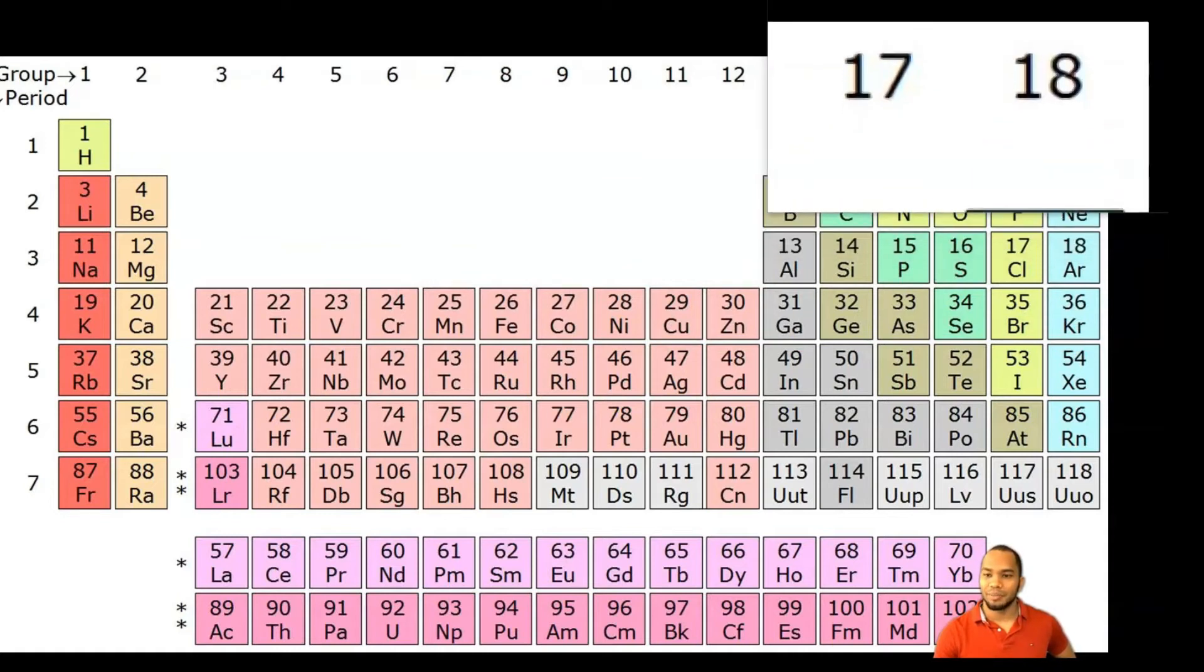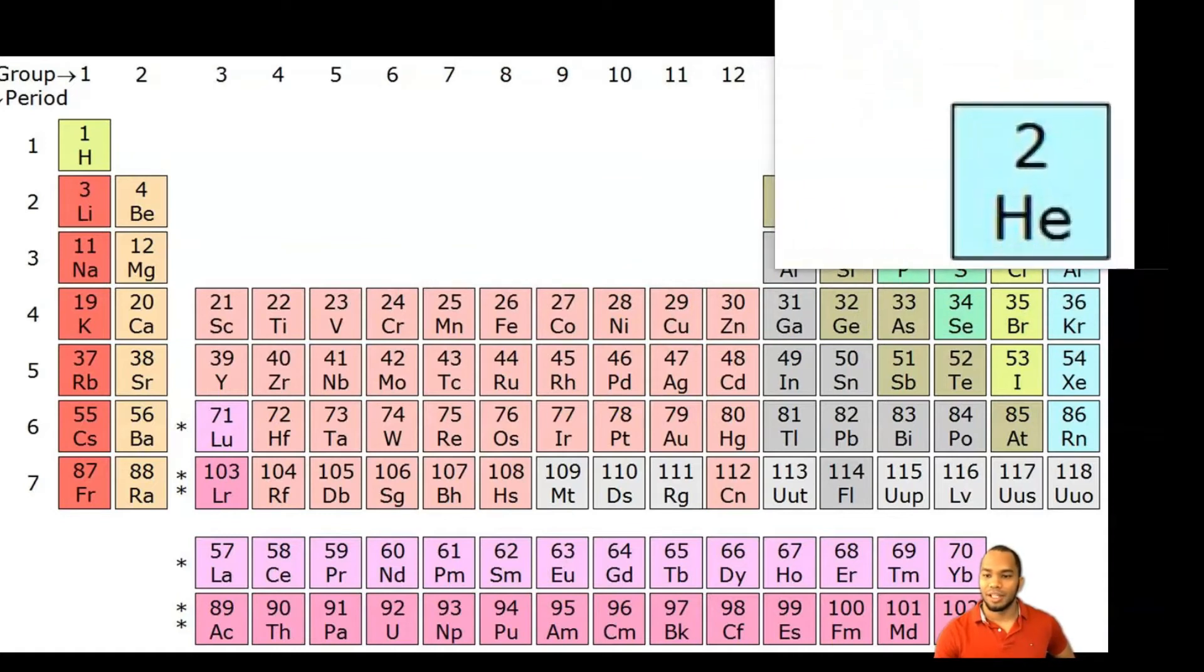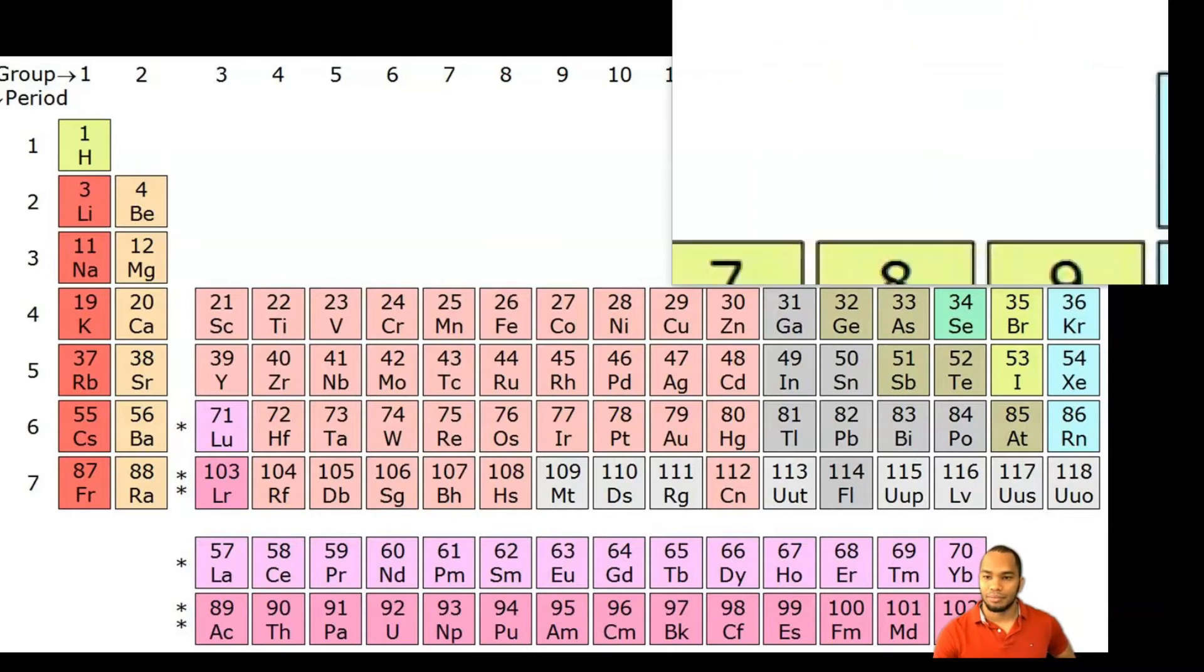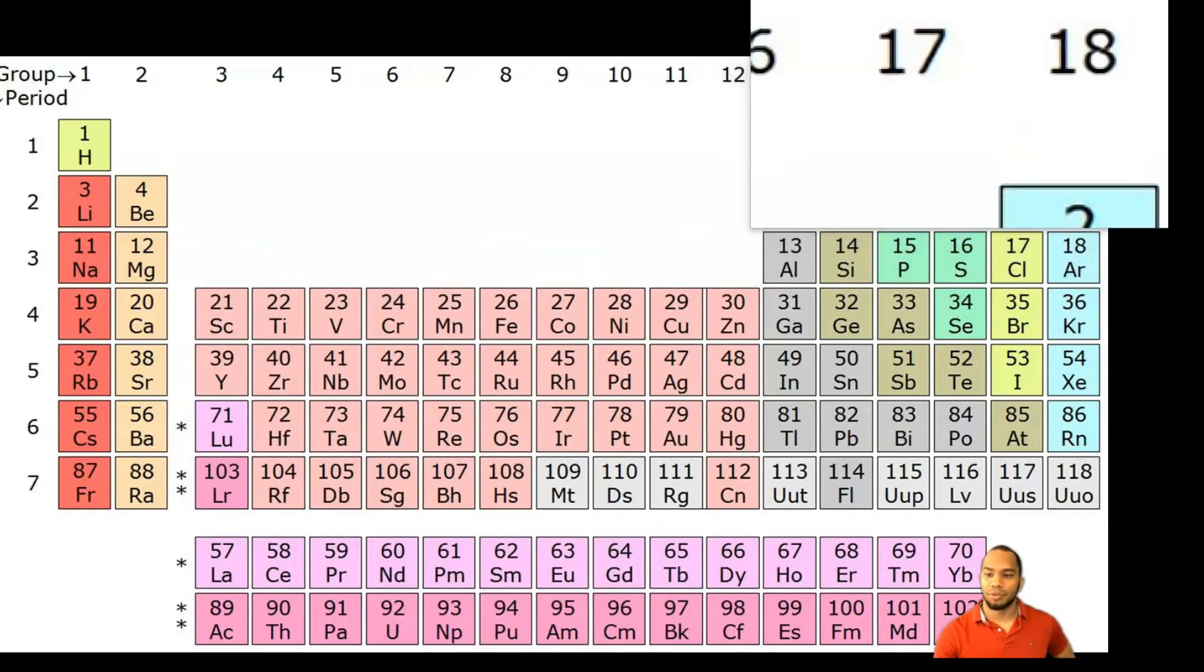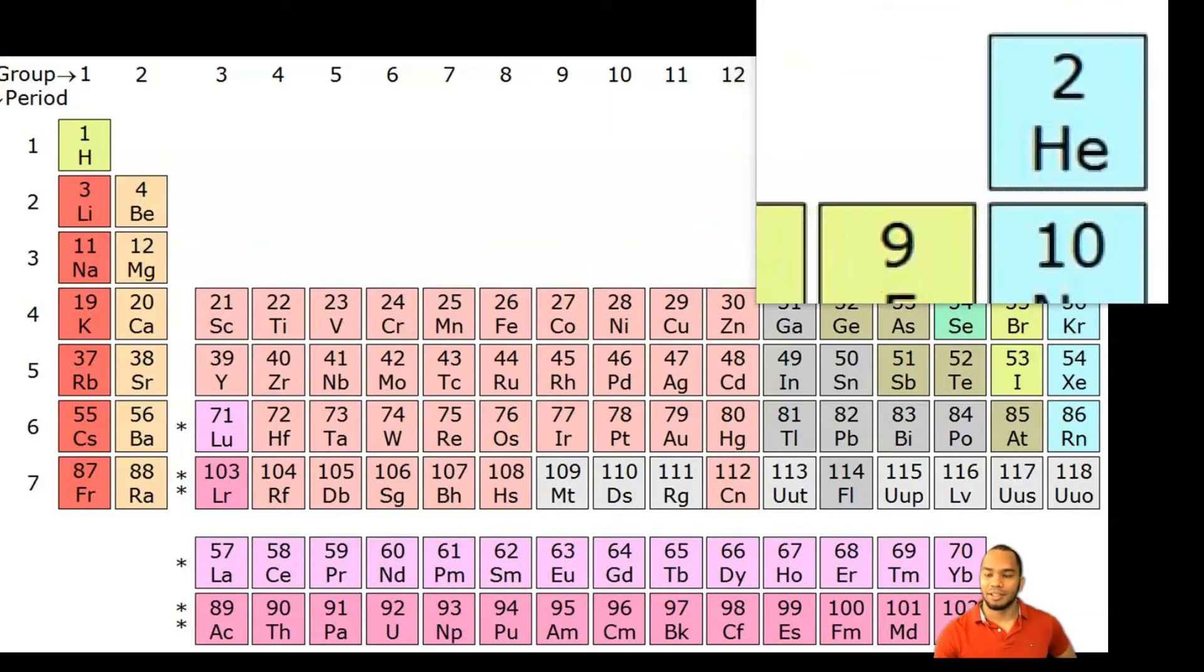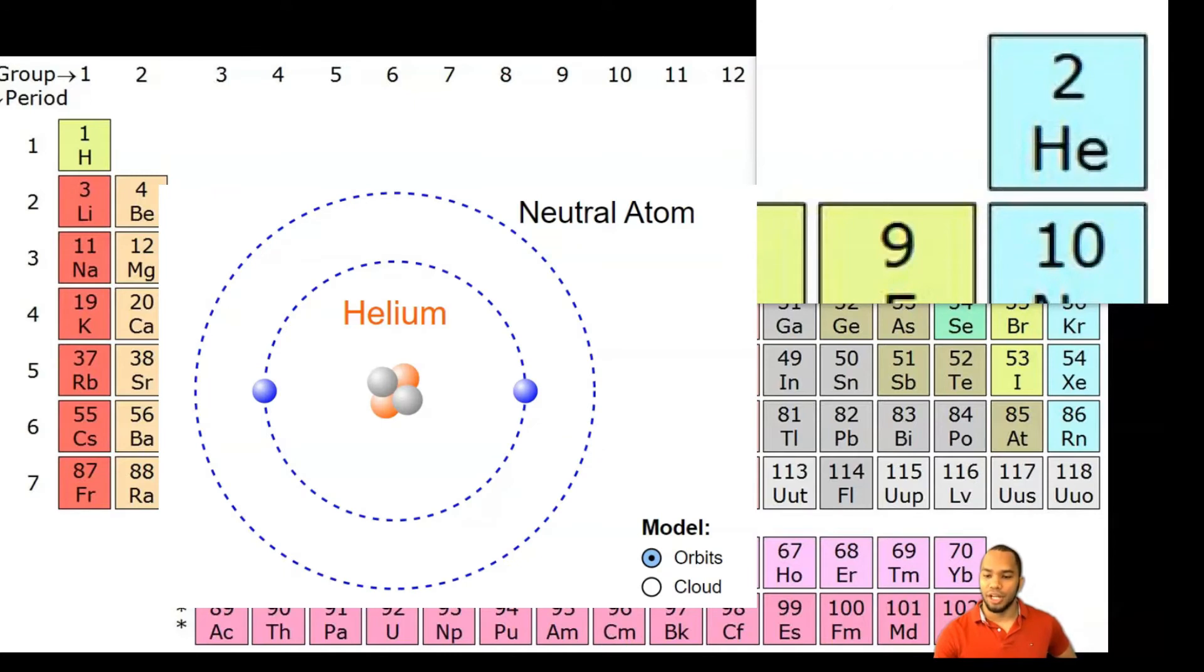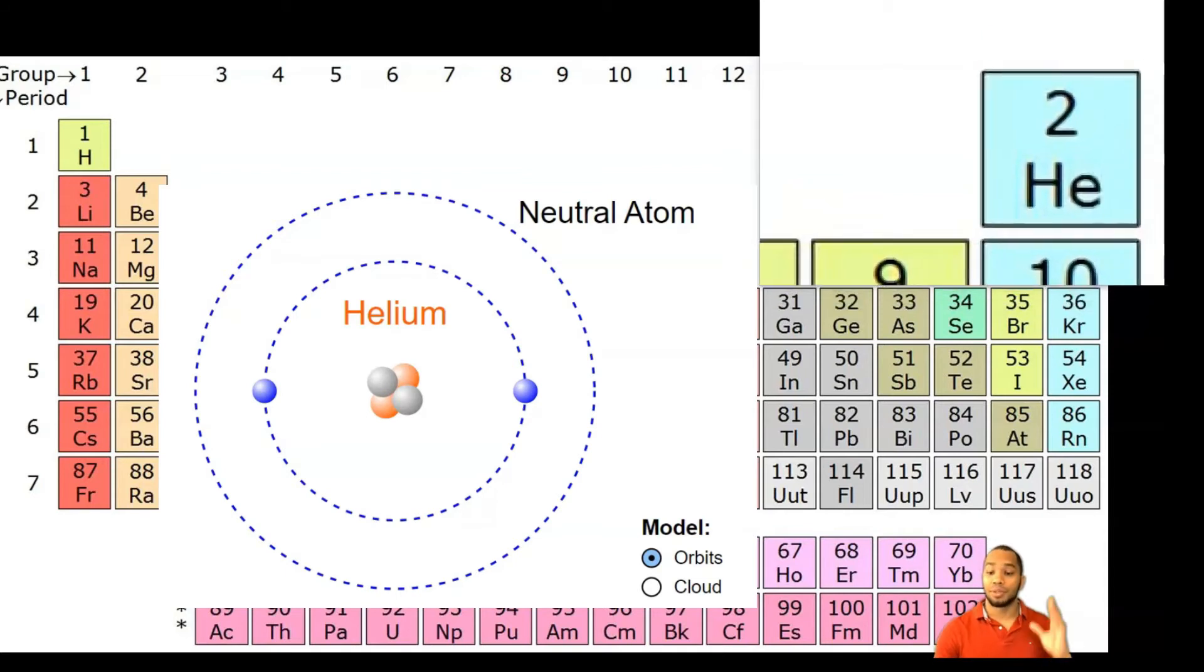this rule, and that is the element helium. Helium only has two valence electrons. The reason why it's in group eighteen is because the first shell has only two valence electrons. What that means is helium is complete with only two valence electrons, so it's already